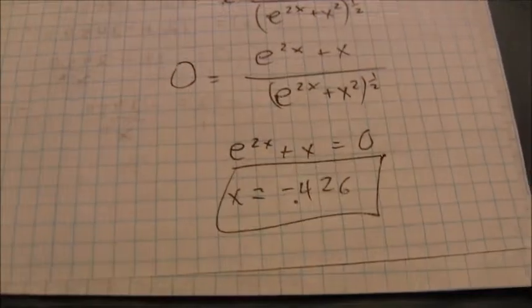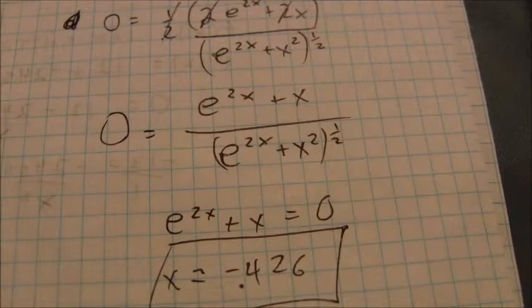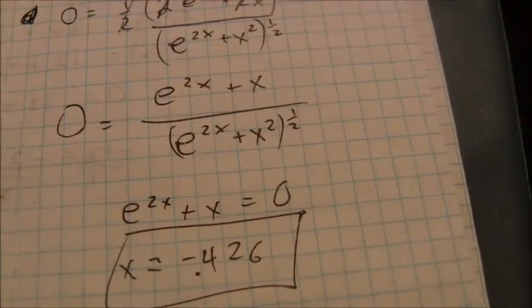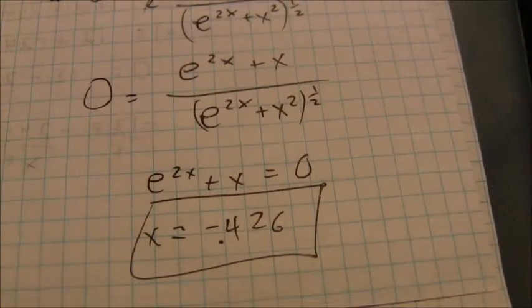And that is my value of x that minimizes that function. So again, figure out where that derivative is equal to 0. And that is the key to figuring out where the minimum value of your function takes place.